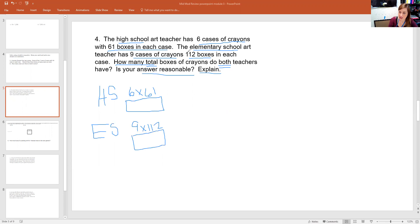And then the question is, how many total boxes of crayons do both teachers have? Well, first I have to figure out how much each teacher has. So let's start with the first one. Let's use standard algorithm, 61 times six. Six times one is six, and six times six is 36. So that's how much the high school art teacher has.